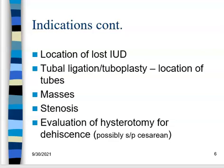Some IUDs — older ones — don't have radiopaque markers, so if a doctor can't remove one, we can locate it with an HSG; it shows up as a filling defect shaped like an IUD. For patients who've had a tubal ligation, we can locate those tubes pre-surgery so the doctor knows where everything is. We can also identify masses, and stenosis where uterine tubes are closed off.